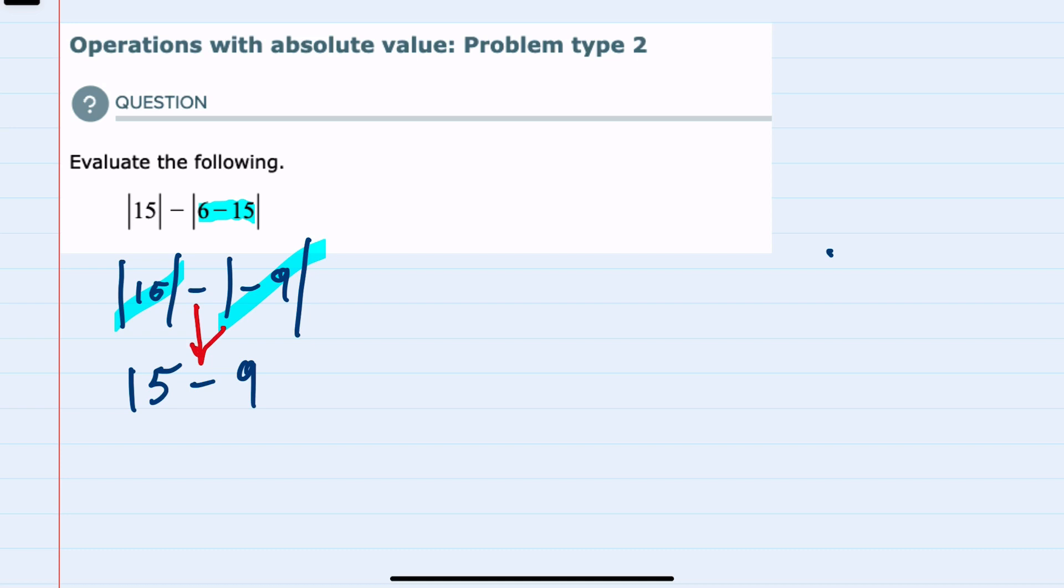And lastly I can do that subtraction now that I've removed the absolute values. 15 minus 9 is 6 as our solution.